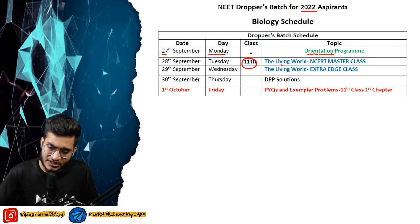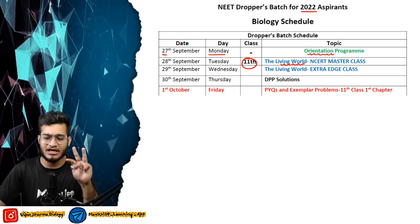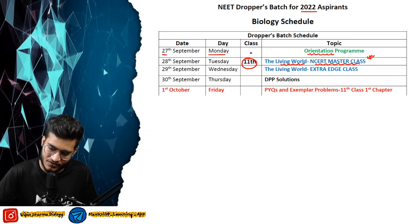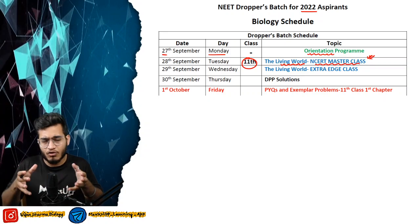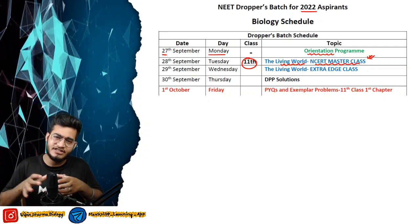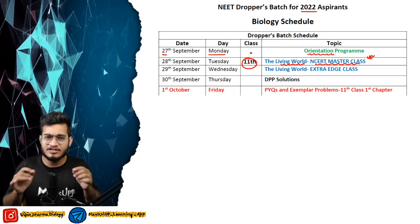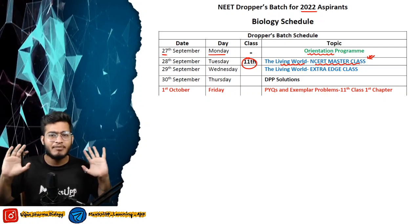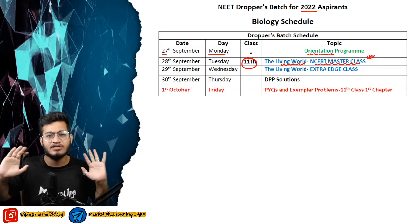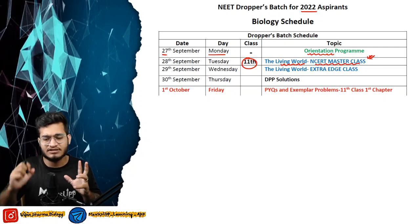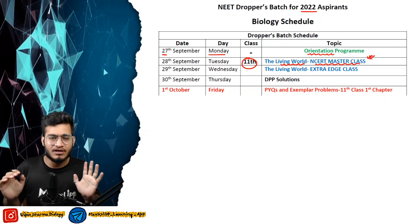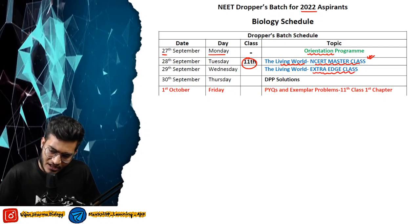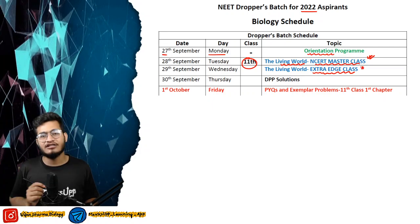Living World, which is a small chapter, I will complete it in one 3-hour video — I've named it the NCRT Master Class. In a few days I'm also bringing a separate course of just master classes. For students who only need to study NCRT and just need 345 marks, the NCRT master class will be there separately. You won't need to study extra — this course provides all the extra edge beyond NCRT as well.